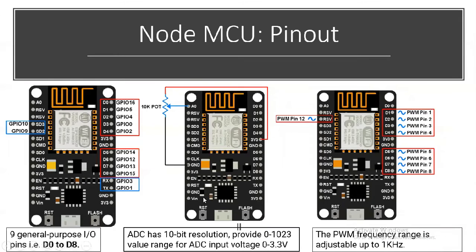The NodeMCU pinout descriptions are as follows. Nine general-purpose input-output pins are useful out of the 13 available, because GPIO 3, GPIO 1, GPIO 10, and GPIO 9 are used for interfacing other devices. That is why normally D0 to D8 — these nine GPIOs — are extensively used by the programmer as digital input-output pins. The A0 pin may accept an analog signal from outside, such as a 10K potentiometer variation voltage.